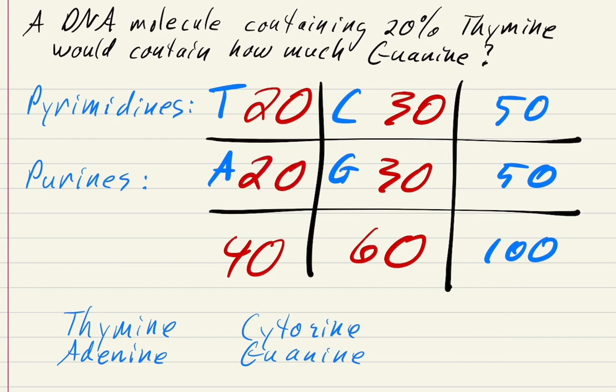There's only one box left and it has to be 20, because only 20 plus 20 equals 40. The number we were asked for is guanine, so we could have literally stopped when we got to 30. That was the answer. But I wanted you to see that you can fill out all of the boxes and answer all possible questions just by knowing any one of them.